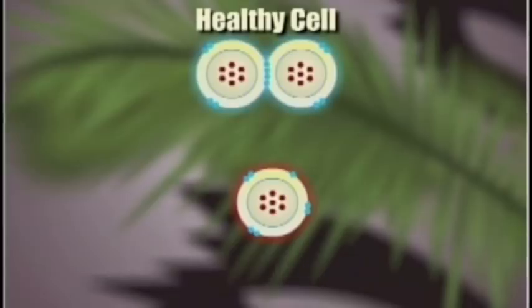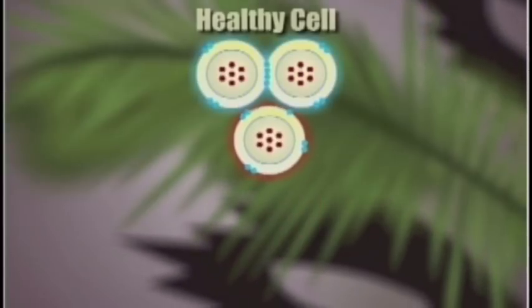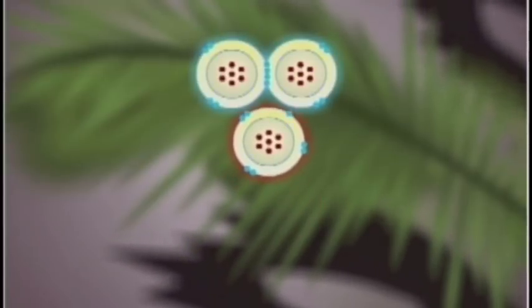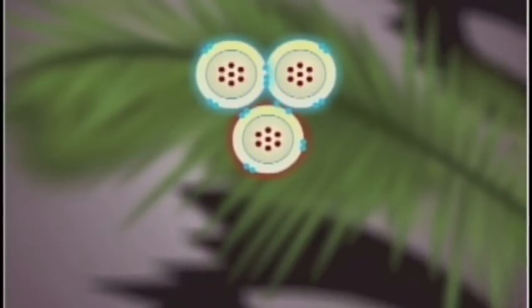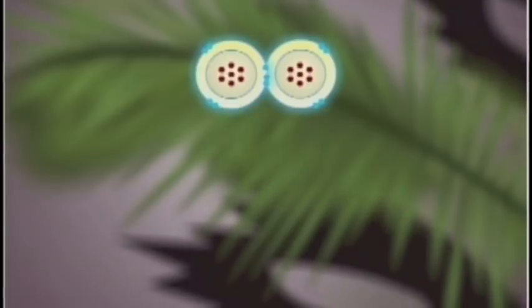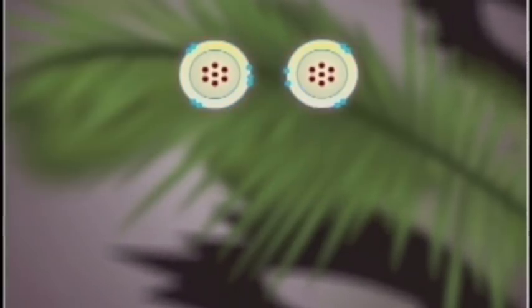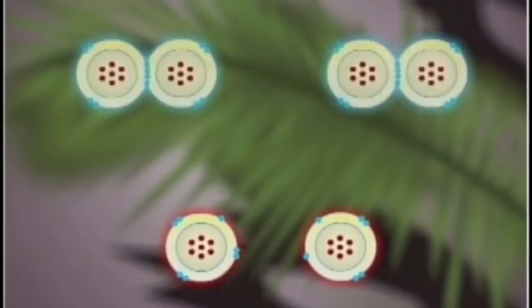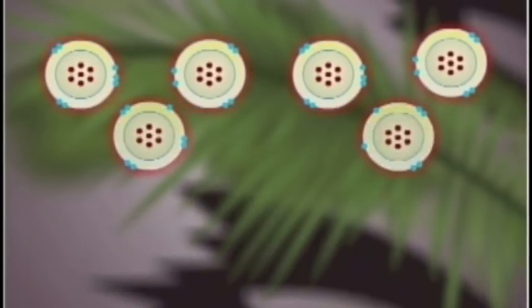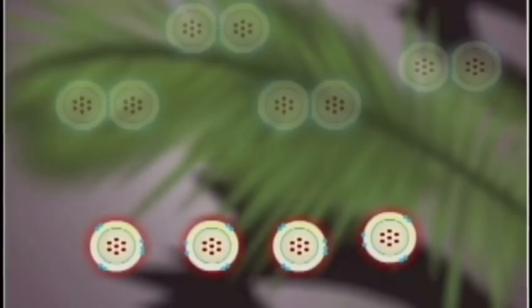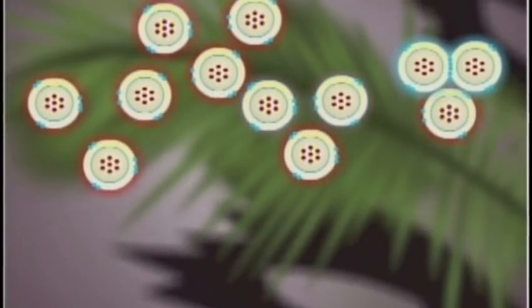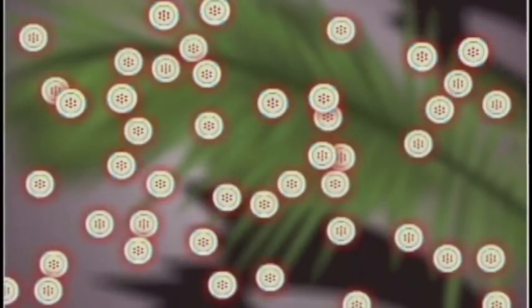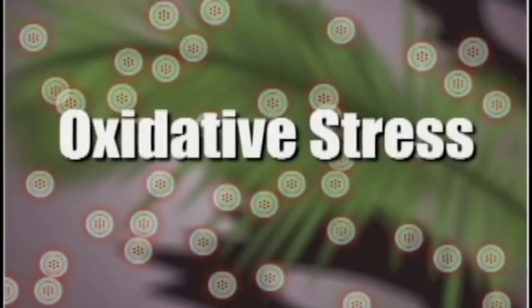These free radicals will start attacking healthy, nearby cells in an attempt to replace their missing electron. When the attacked molecule loses its electron, it becomes a free radical itself. This can cause a chain reaction to occur, resulting in the disruption of millions of nearby molecules. This chain reaction is known as oxidative stress.